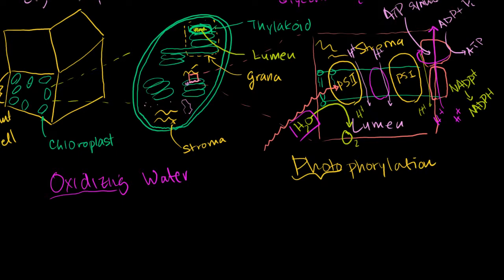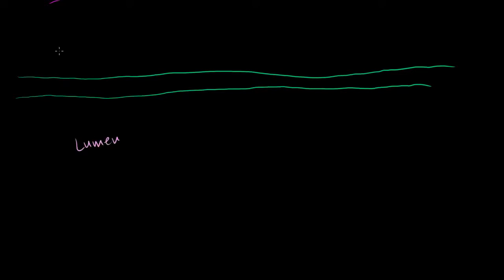I'm going to draw the same membrane here, nice and spread out. So let me draw a nice big membrane like that — that's the inside of the membrane. You can imagine that this loops around and that would form the thylakoid. On this side of the membrane we have the lumen, and on the outside of the membrane we have the stroma, or all the fluid that fills up the chloroplast.